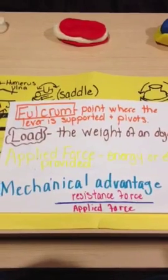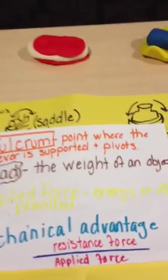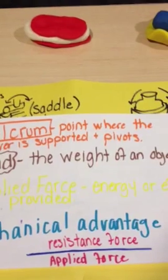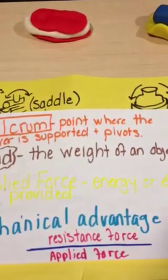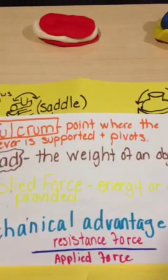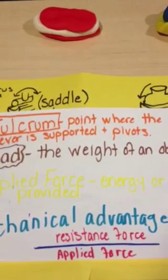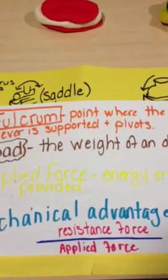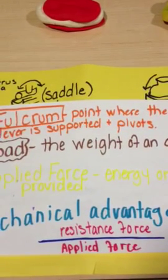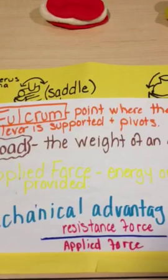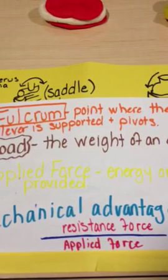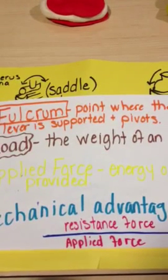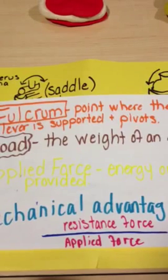Some additional terms: diarthrosis is the articulation that permits free movement, which is good for the joints. Gliding joints are two flat surfaces approximately equal in size. They are uniaxial because they can slide in many directions.